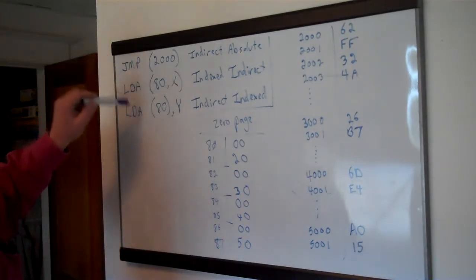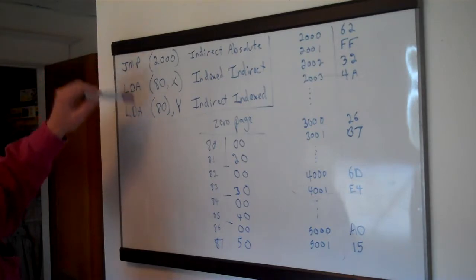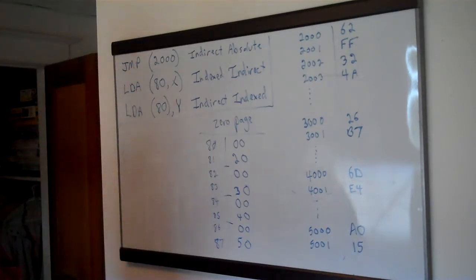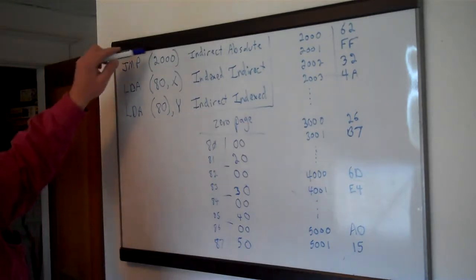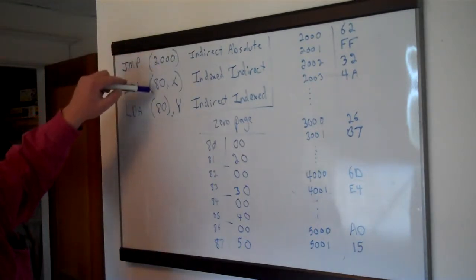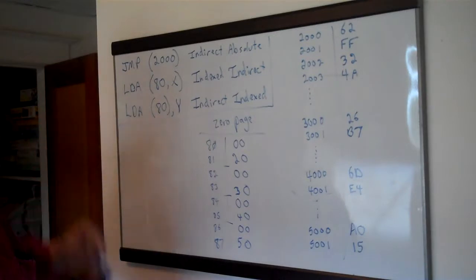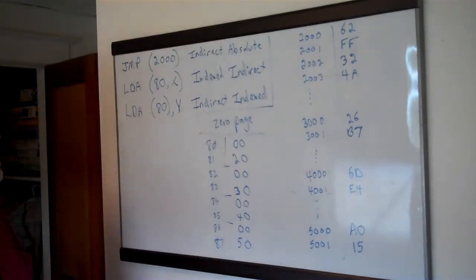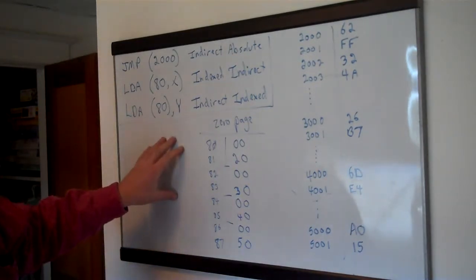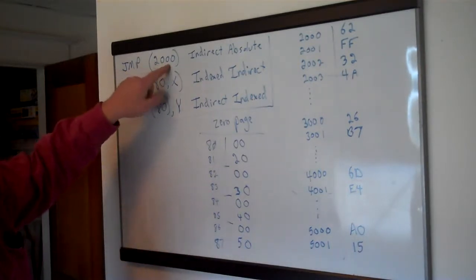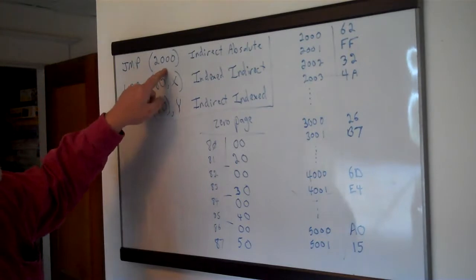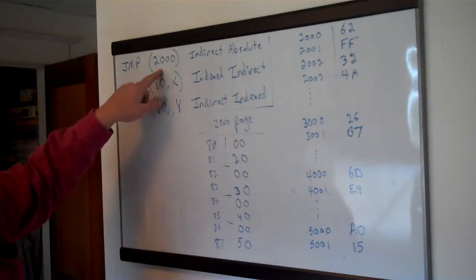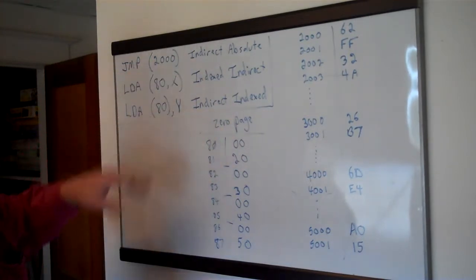There are three of them and we'll go through them from least important to most important. You can tell they're the indirect ones because they always involve parentheses — that's one way you can recognize them in assembly language. We call them indirect because it's not going to actually function on this address; it's going to function on an address that it finds there, so it uses this indirectly to go get an address and then work on it.